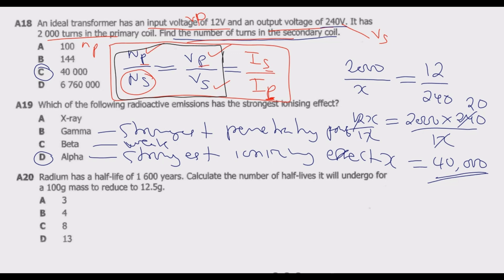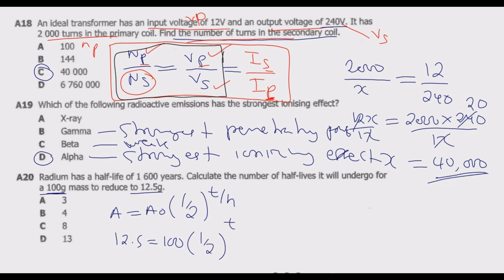Question 20: radium has a half-life of 1,600 years. Calculate the number of half-lives it will undergo for a 100-gram mass to reduce to 12.5 grams. Using the formula: at the beginning we have 100, at the end we have 12.5. So 12.5 = 100 × (1/2)^(T/1600). Dividing both sides by 100 gives 1/8 = (1/2)^(T/1600).